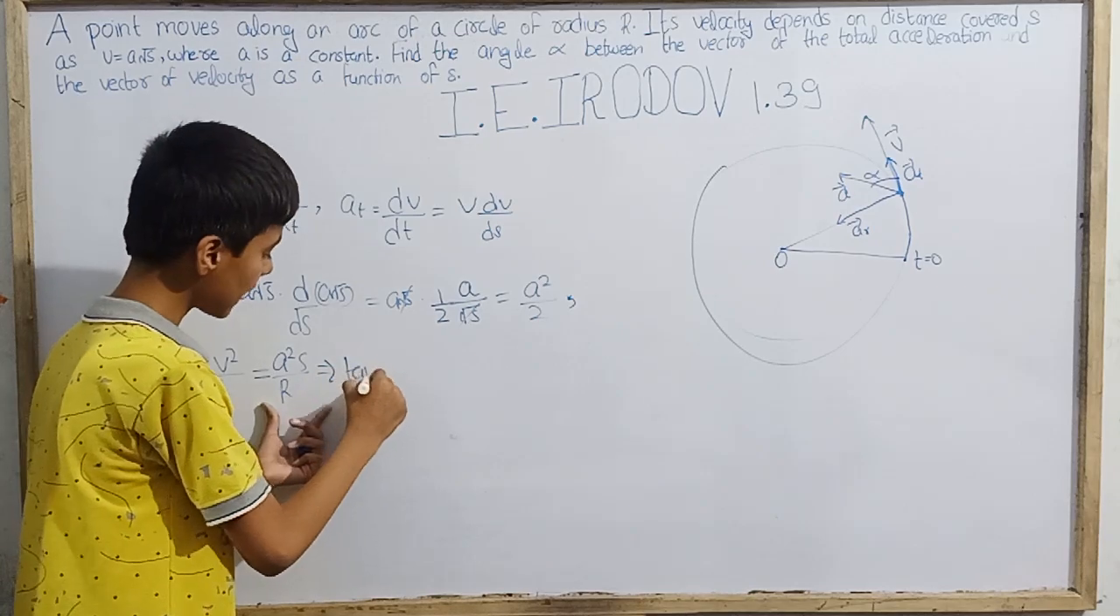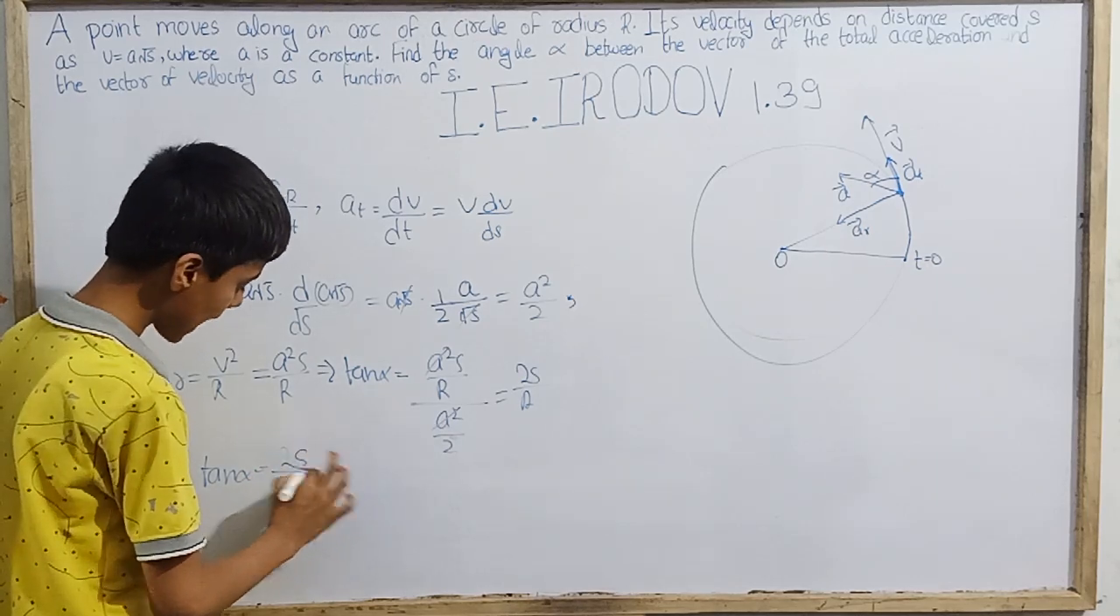For radial acceleration, let's write v squared upon r. v square ho jayega a square into s upon r, so kuch aisa hamare paas apna radial acceleration. So agar mujhe dekhna hai tan alpha ki value, this is ar over at. ar is a square s upon r divided by tangential which is a square by 2. So yahan se a square a square cancel, hamein milta hai 2s upon r. So yahan se hamein finally milta hai ki tan of given angle alpha is 2s upon r. This implies that alpha is tan inverse of 2s upon r, and this is finally hamara final answer.